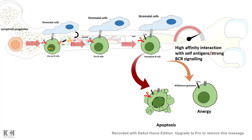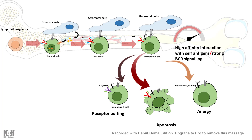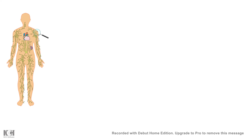Alternatively, autoreactive immature B cells could be suppressed or put into a hibernation state by a mechanism known as anergy, where B-cell receptors are downregulated. There is also a third way where the body gives these immature B cells a chance to re-edit their BCRs such that they no longer show high affinity to self-antigens. All these mechanisms ensure that autoreactive B-cell production is prevented at the level of bone marrow — this is known as the central tolerance mechanism.